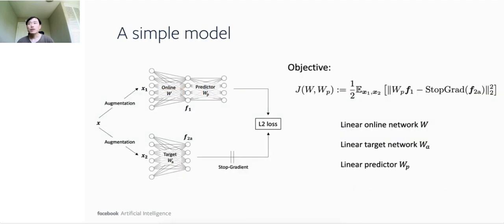In this paper, we build a minimum model to study the dynamics of non-contrastive SSL. In this model, two augmented data points, X1 and X2, are first obtained from two data augmentations of the same input X, and then sent to online network W and target network W_A, whose parameter W_A is a moving average version of W. The online part has an extra predictor W_P. The final outputs are then compared with L2 loss, and then the gradient flows through the predictor, the online network, but not the target network, which is a trick called stop gradient.